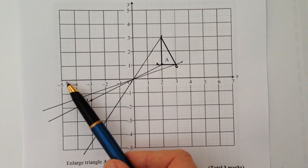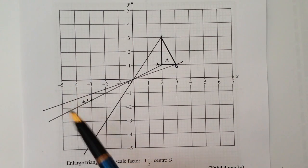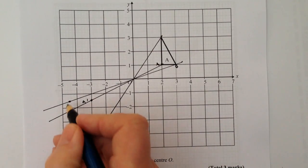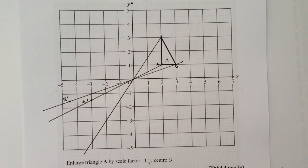And then in this particular case, rather than going up one I'm going to go down one and a half, so that gives me my new point for B prime there.